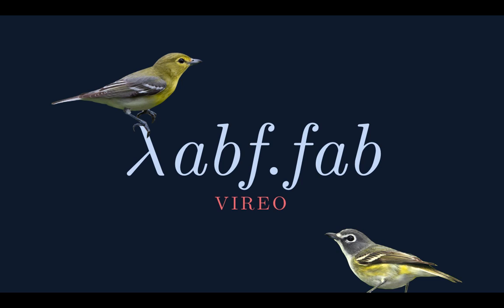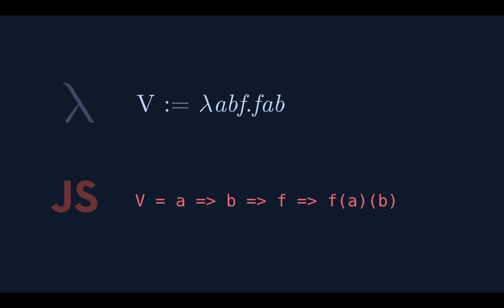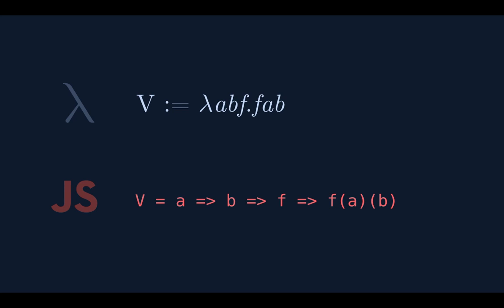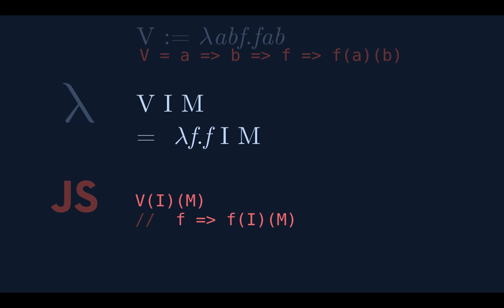The Vireo takes two arguments and holds onto them — it pairs things together. You've got a box closed over two arguments. You can move it around, and when you want to access the things inside, you give the box a function, and that function gets those two arguments. It's closures — using closures as data structures. The Vireo takes A and B, waits for a function, and once you give it a function, it supplies A and B to that function.